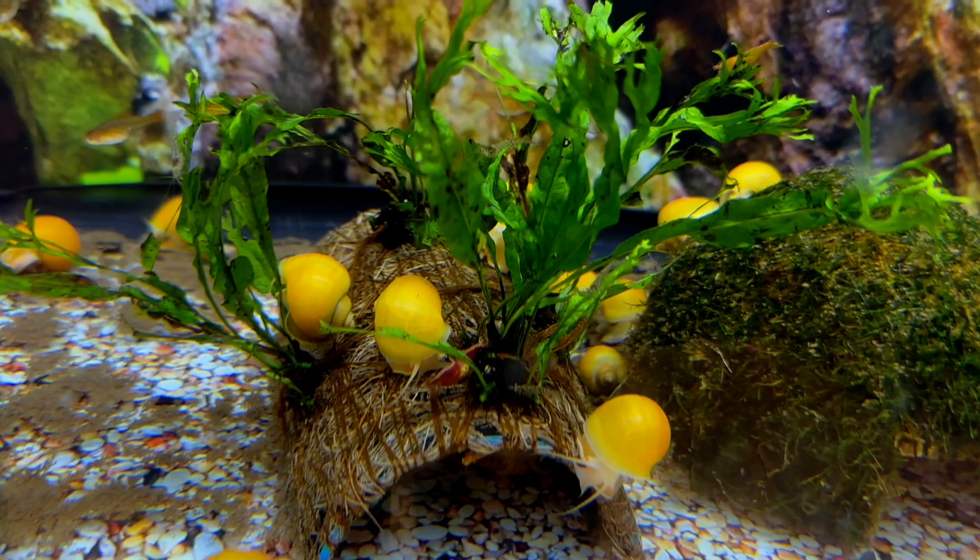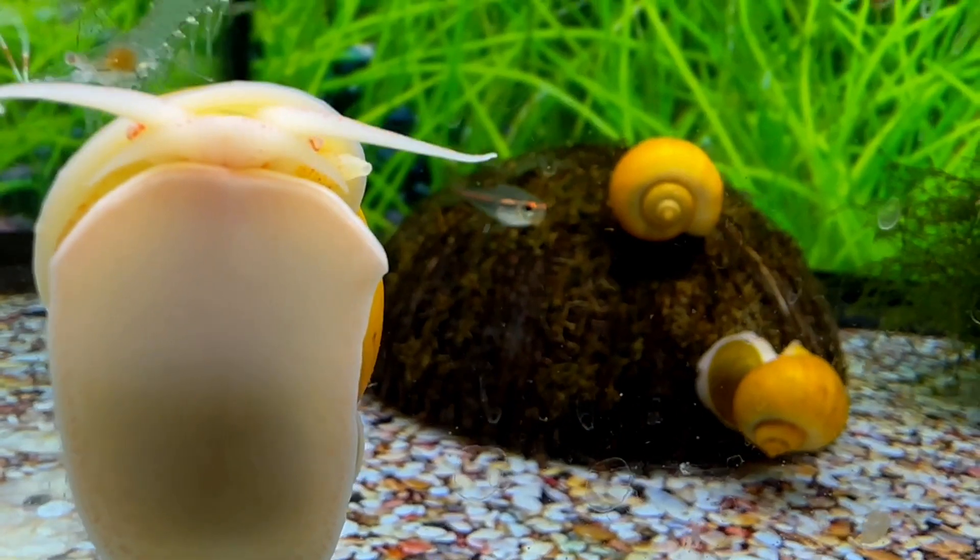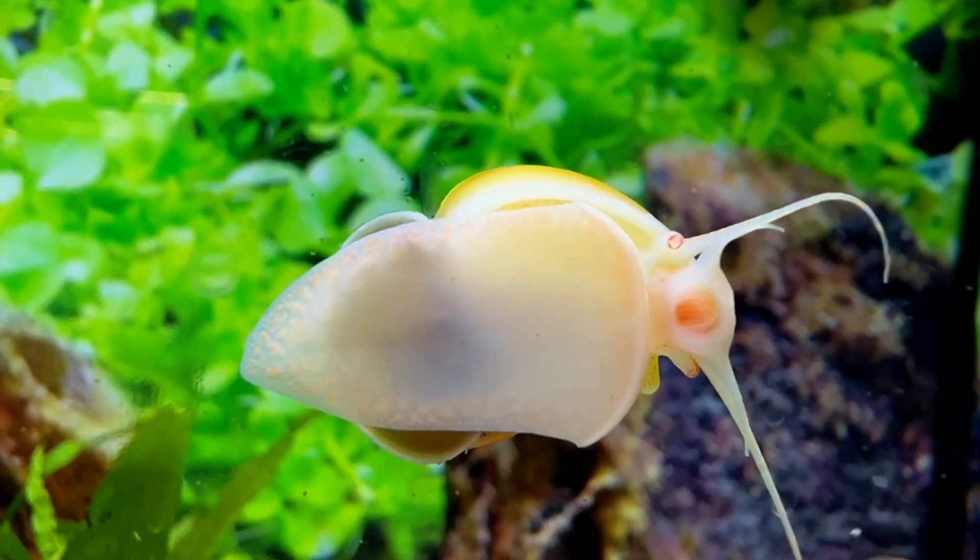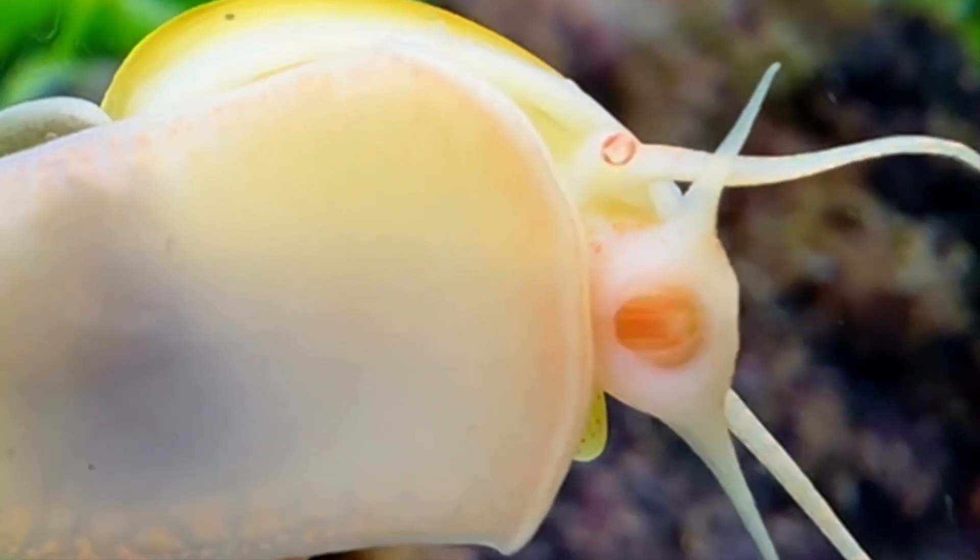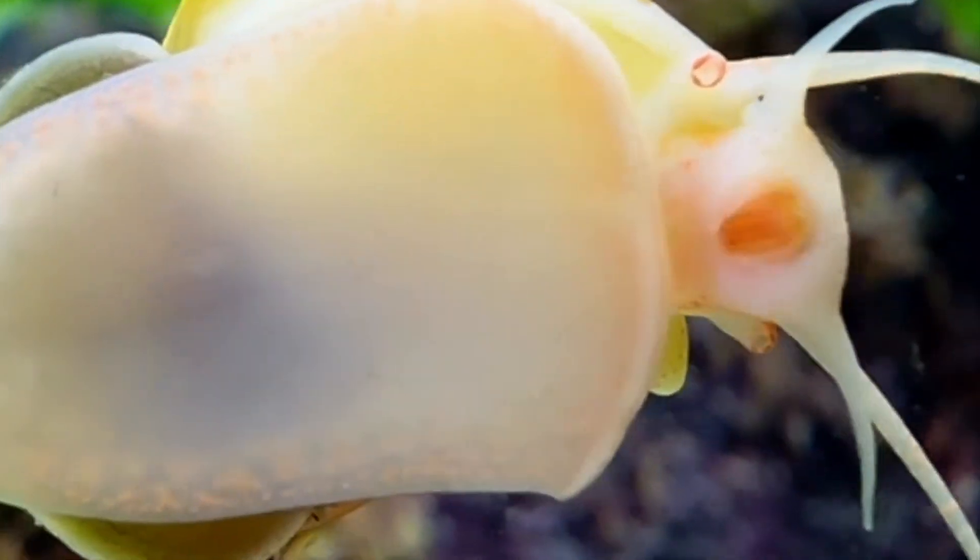I is for Inca Snail. J is for Julie Corrie Catfish.